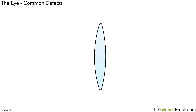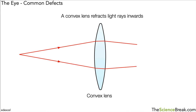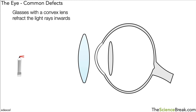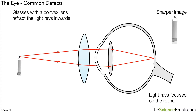So what can we do about long-sightedness? We use a convex lens. A convex lens refracts light rays inwards. We can use glasses with a convex lens — the light rays are refracted inwards slightly, and then when they hit the eye's lens they're refracted a bit more, so they actually meet at the retina. The light rays are focused on the retina and we now get a normal, sharper image.